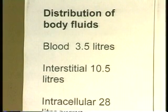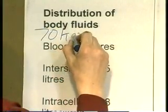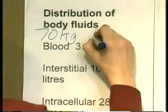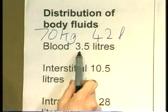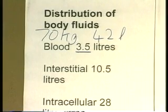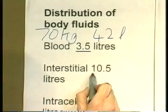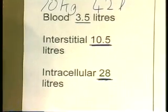Let's review those fluid compartments. These figures assume we're talking about an adult — approximately a 70kg man; children will have significantly less fluid. We've said there's a total of about 42 litres of fluid. Approximately 3.5 litres will be in the blood — though total blood volume is more like 5 litres, as quite a lot is taken up by cells. The interstitial fluid is about 10.5 litres, and the intracellular fluid is the largest at 28 litres.